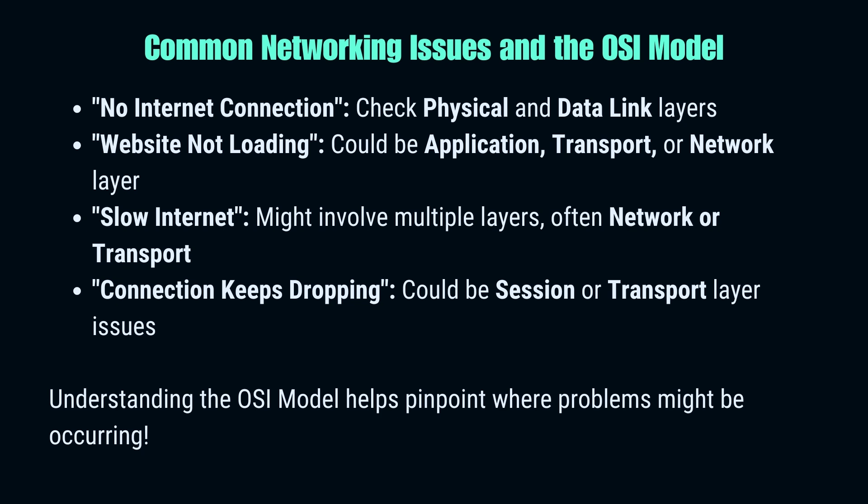Understanding the OSI model can be incredibly helpful when troubleshooting network issues. No internet connection at all? That's likely a physical layer problem — check your cables or Wi-Fi signal. Website not loading? Could be a network layer issue with routing. Downloads keep getting corrupted? The transport layer might be dropping packets. Can't log into a website? That might be an application layer problem. By knowing which layer is responsible for what, you can pinpoint problems more quickly and know where to start fixing them. With the OSI model as your guide, you'll be solving digital whodunnits in no time.